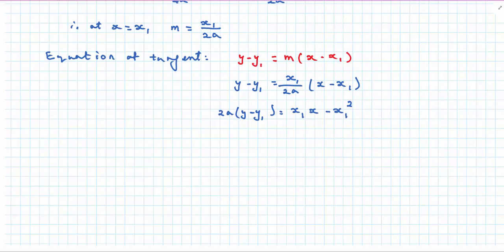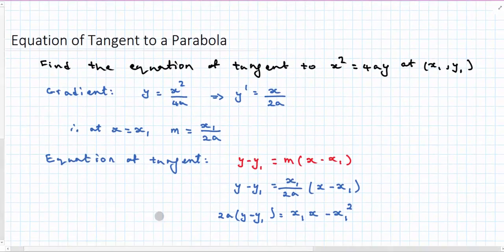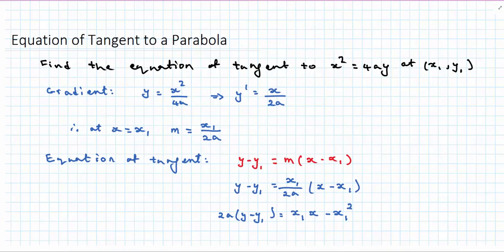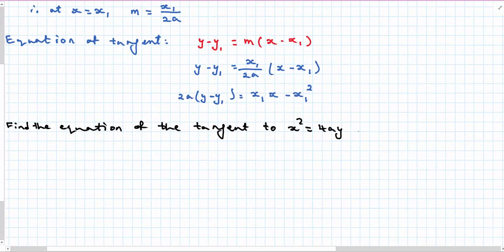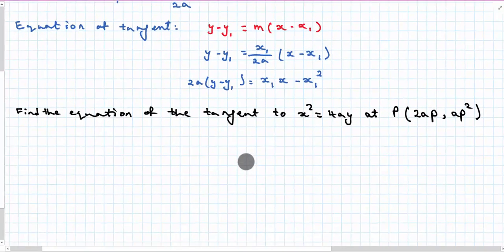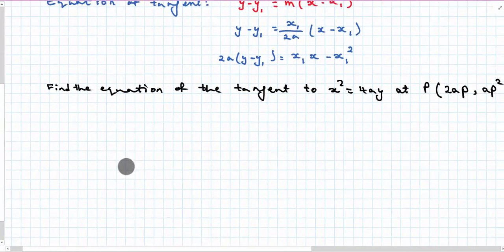Let's look at the parametric version of the same question. So we're going to find the equation of the tangent to x squared equals 4ay. But now I am going to give the coordinate of the point in its parametric form. Now remembering x is 2ap. In this case I'm using p and y is ap squared. As before, first step is to find the gradient.